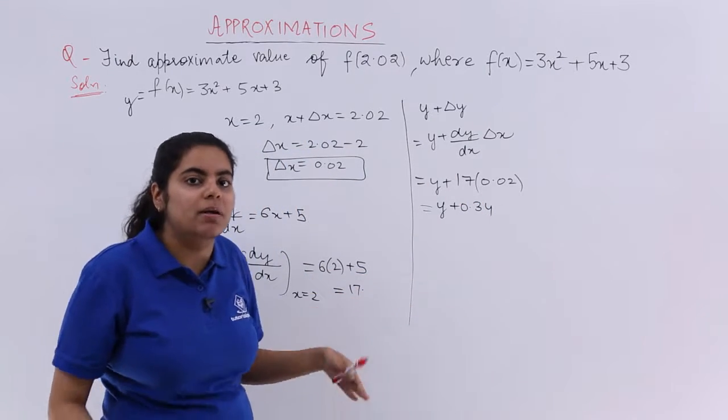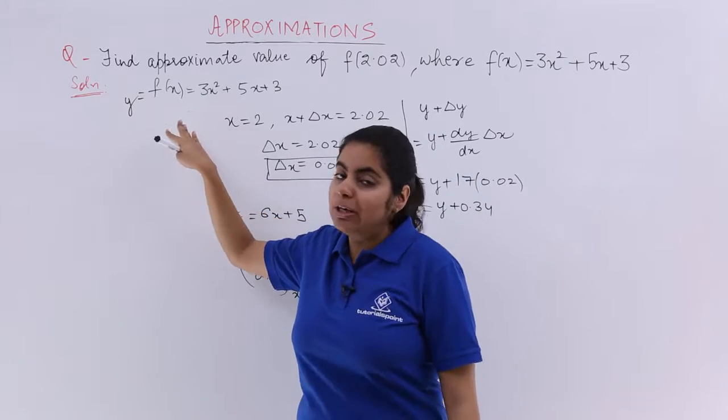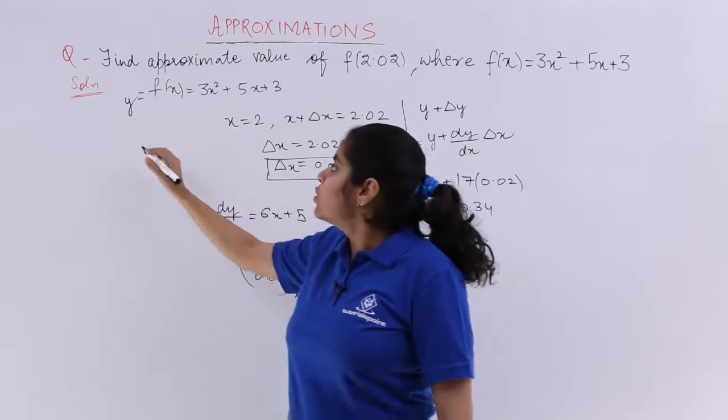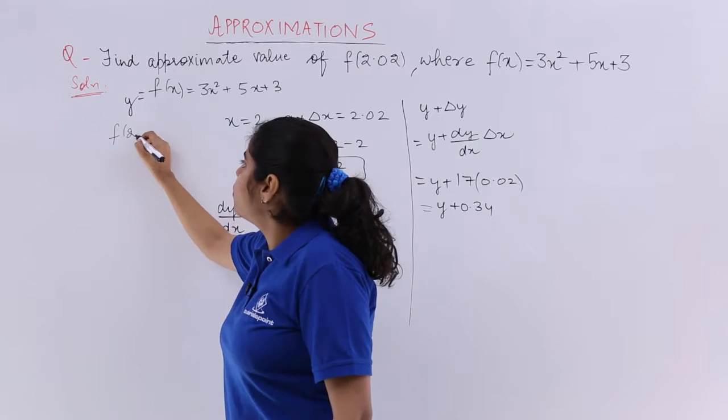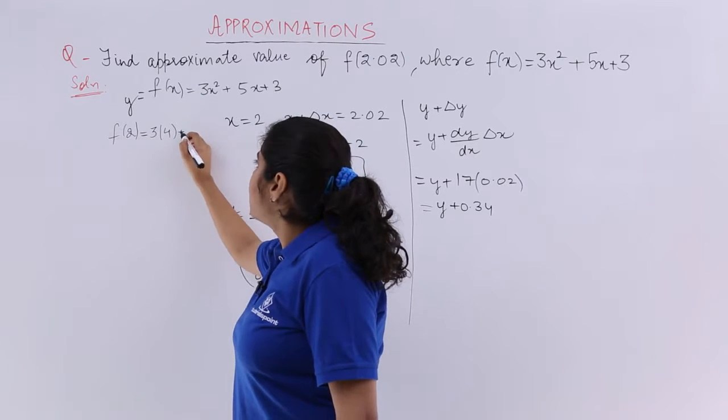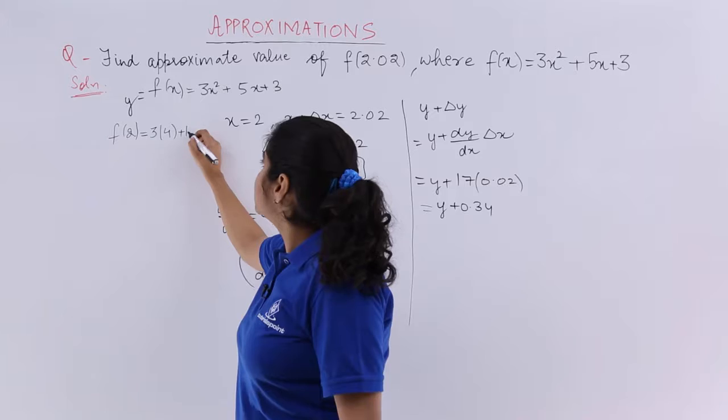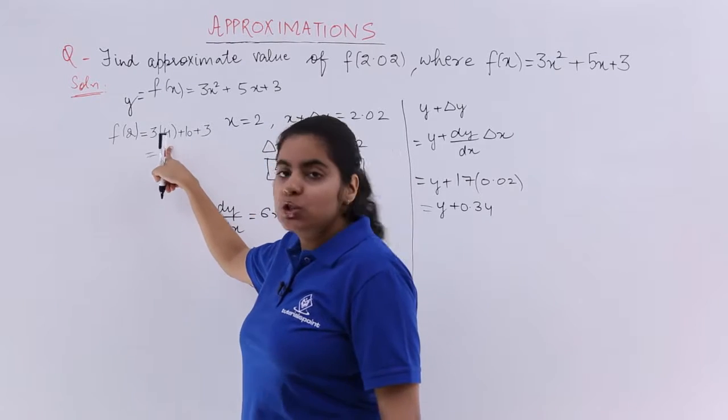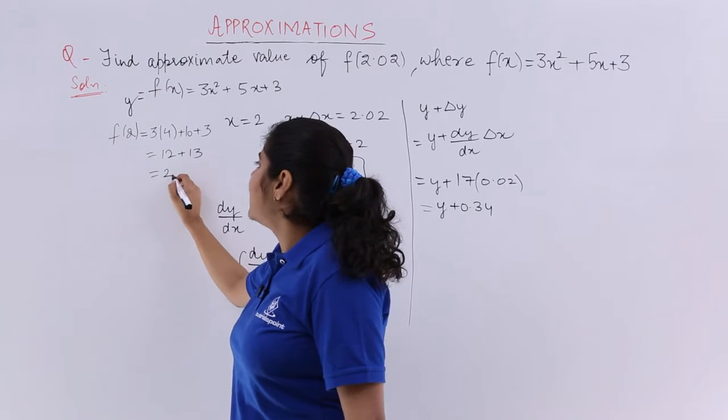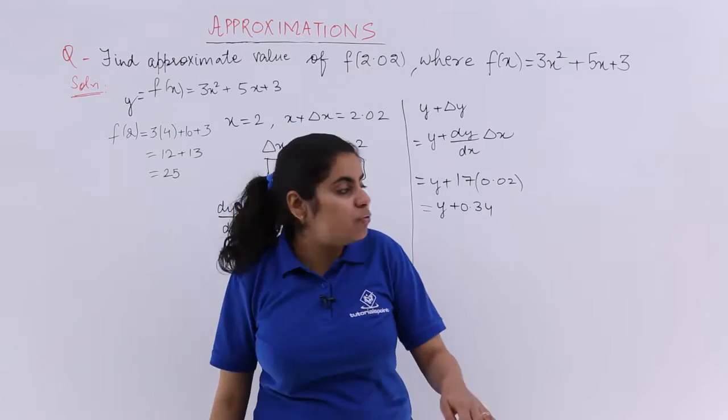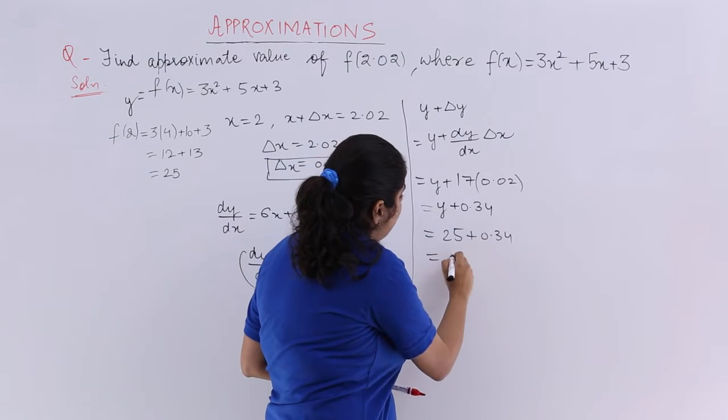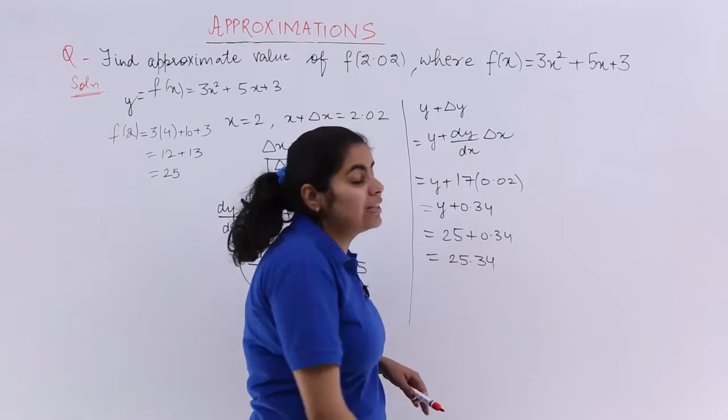Now what is my y? That is also important. My y is nothing but the given function. But you cannot put the polynomial function without putting the value of x. x has to be 2. So my f(2) is actually my y. So it is 3 × 2² which is 4, plus 5 × 2 which is 10, plus 3. So it is 12 + 10 + 3, which is 25. So y is 25, plus 0.34. So it is 25.34.